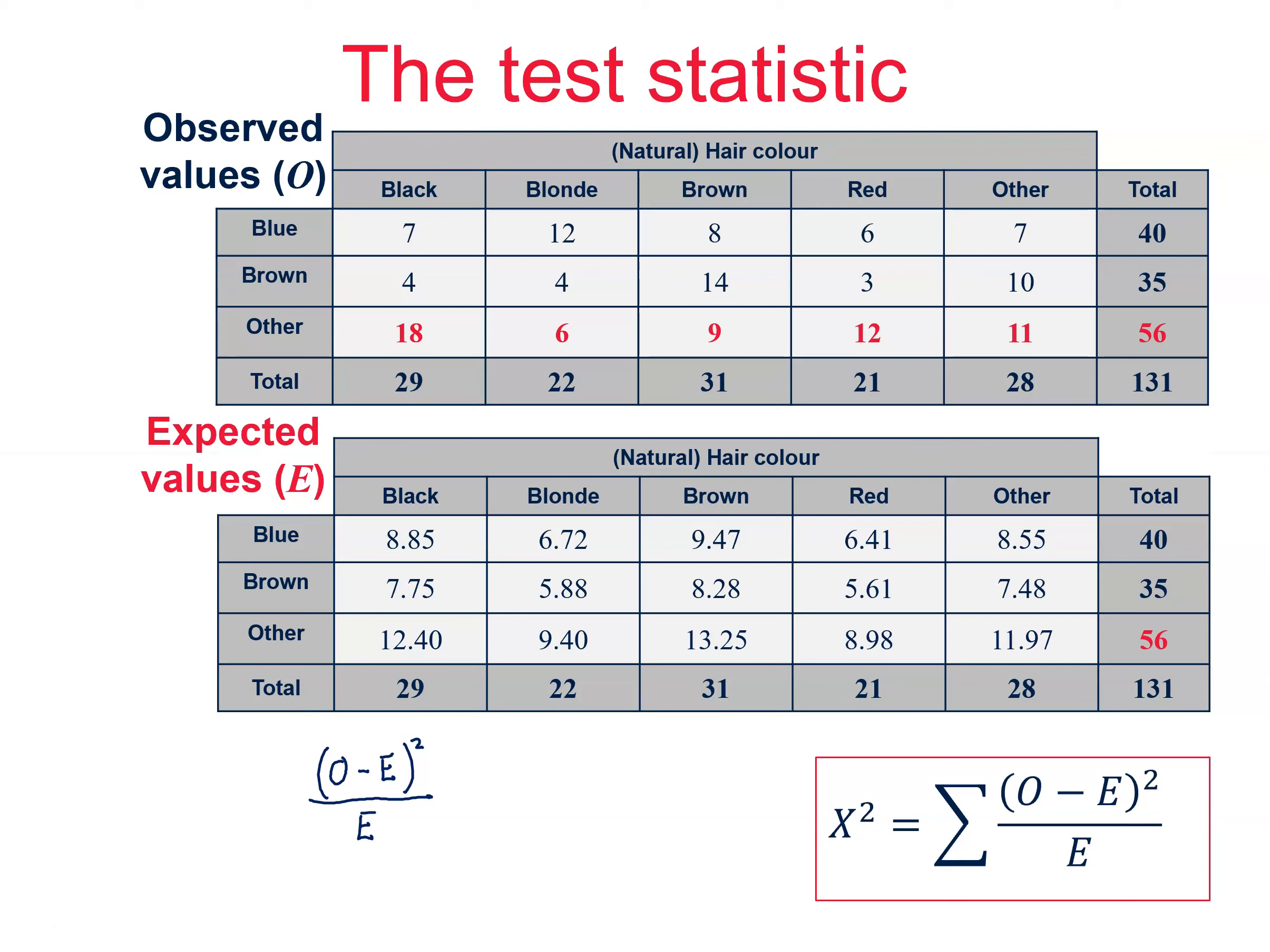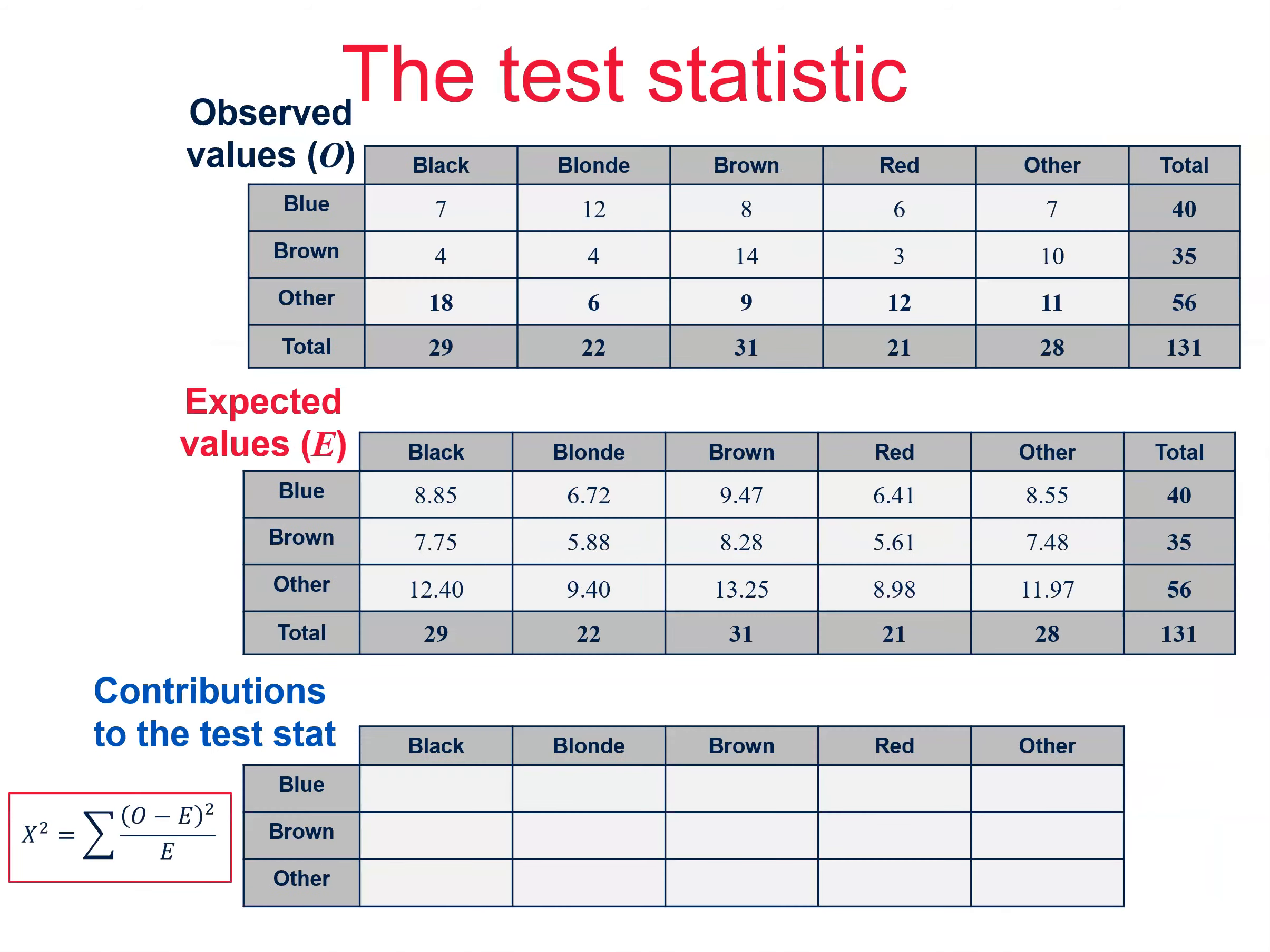Note that the formula for this test statistic is provided for you in the exam. So, let's start calculating the contributions for each cell. For black hair and blue eyes, we've got 7 minus 8.85 all squared divided by 8.85, which is 0.387 to 3 decimal places.